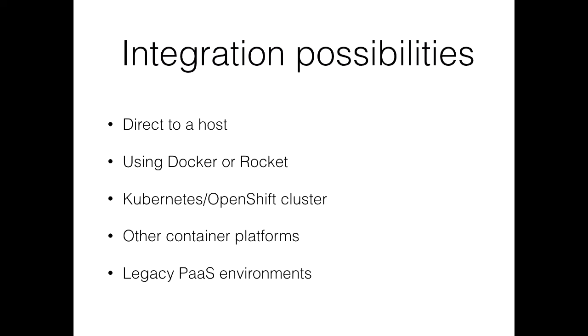My goals in all of this: I want to provide a way that makes it very easy to deploy a web app direct to a host in development mode or to a host using Docker or Rocket, to be able to deploy to a platform as a service such as Kubernetes or OpenShift, or other container platforms. If you can build out a Docker image you can run it on Karina from Rackspace, or a Docker service on DigitalOcean. Technically I could also make this work on legacy PaaS environments — I have had an earlier version working on Heroku.